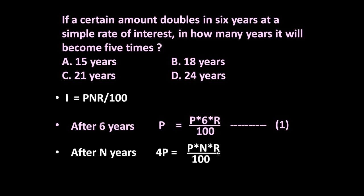R is the rate of interest. We don't know what is the rate of interest. N is the number of years in which the amount becomes 5 times. So 4P is equal to P and R upon 100, which means principal is P and remaining 4P is the interest. Let us call it equation number 2.